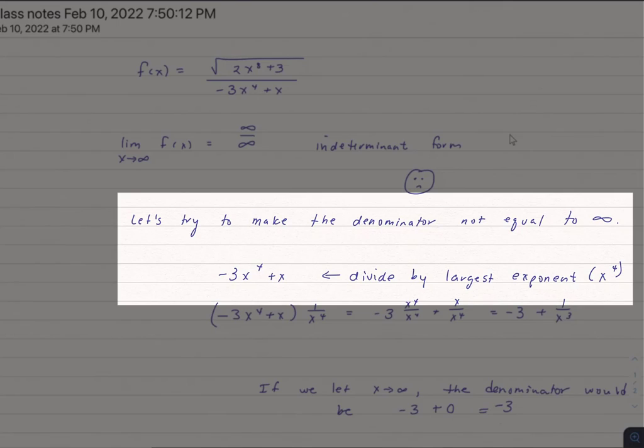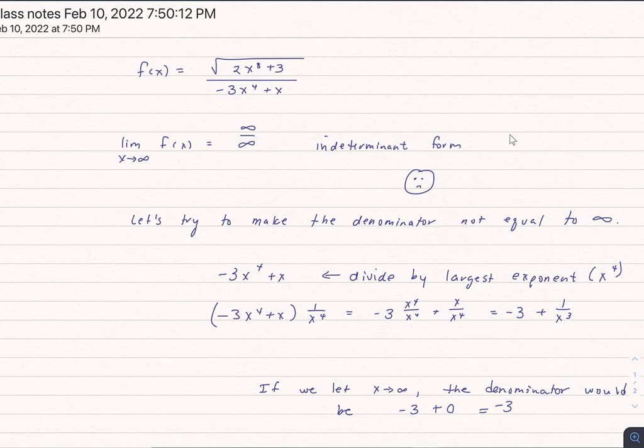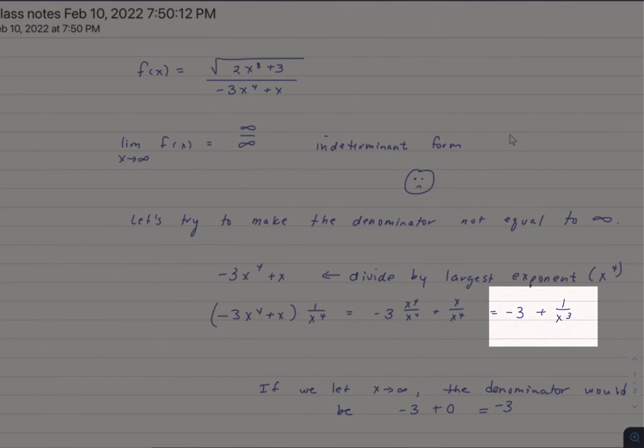How would I do that? Well, if I look at the denominator, I see the biggest, the largest exponent is x to the fourth. So what I'm going to do is I'm going to divide by that largest exponent. I'm going to divide or multiply by 1 over x to the fourth. And when I do that, I end up with negative 3 plus 1 over x cubed.